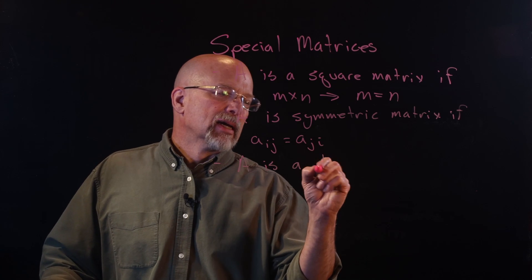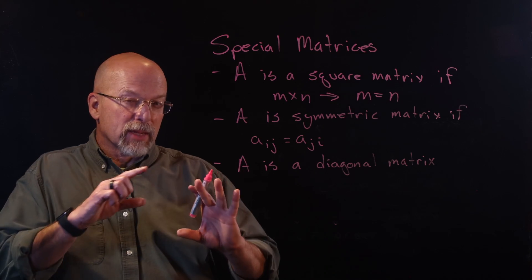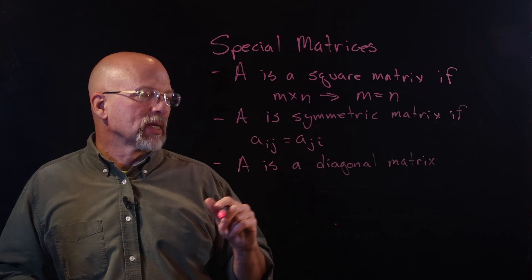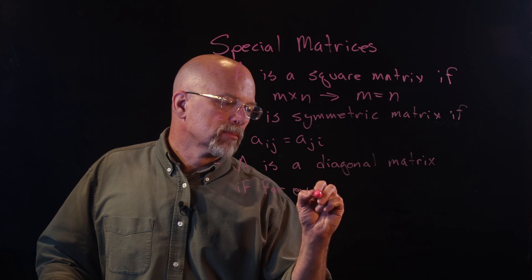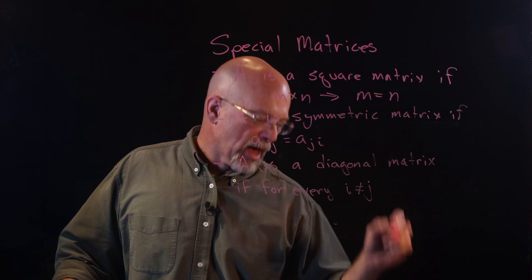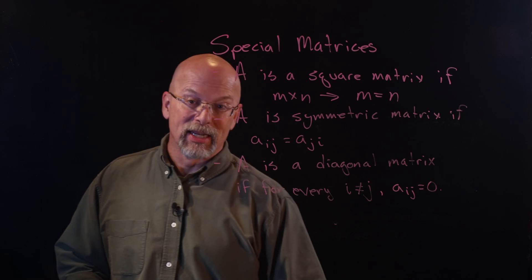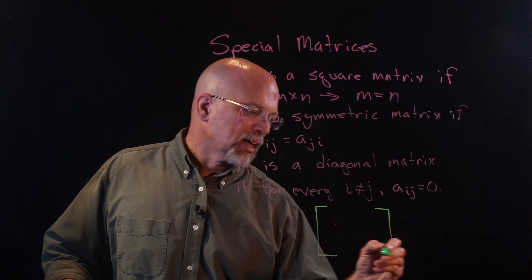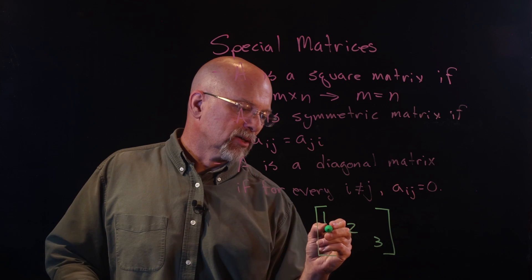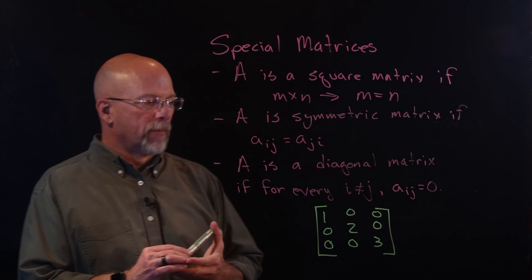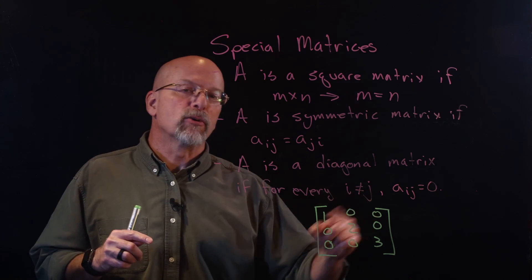A is a diagonal matrix. This is very similar to a symmetric matrix, except there's something very special about the elements on either side of the diagonal. A is a diagonal matrix if, for every i not equal to j, then A sub i,j is equal to 0. So we have 1, 2, 3 on our diagonal, and all elements mapped across that diagonal have to be equal to 0. It is a symmetric matrix, except the elements being mapped are always 0.